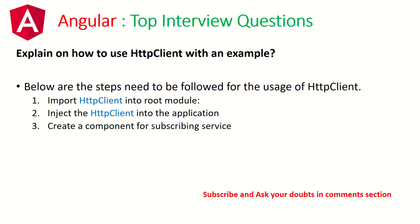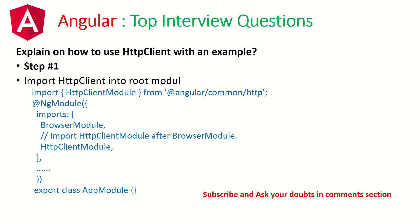This is a three-part question — they will definitely ask you how to use HTTP Client with an example. The next three slides talk in detail about the implementation, so follow carefully and let me know if you have any doubts. HTTP Client is used to make HTTP calls to the backend APIs. The first step is to import HTTP Client into the root module. Then we inject the HTTP Client module into the application, and then create a component for subscribing to the service. You can see here the module to import is called HTTP Client Module.